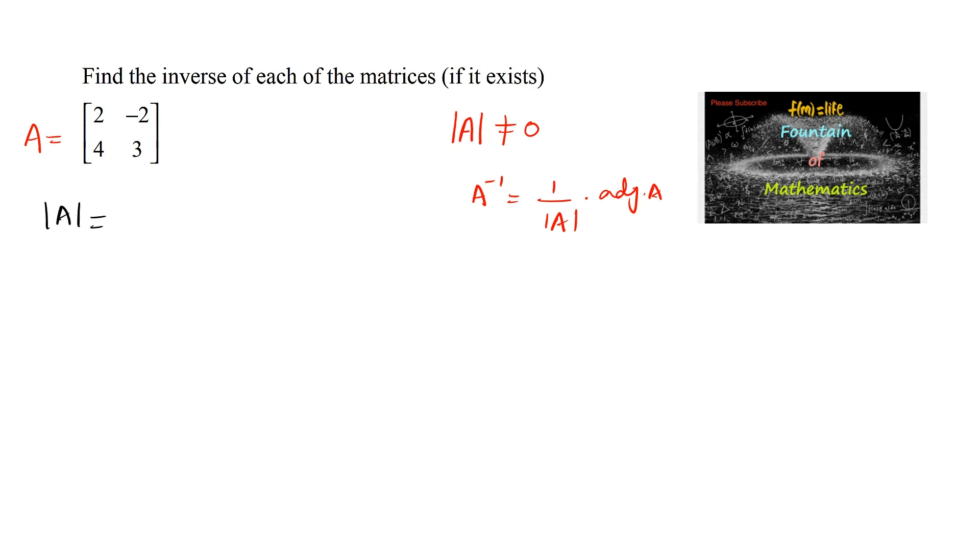Det(A) equals, for a 2 by 2 matrix, 2 times 3 minus (-2) times 4, which is 6 plus 8, which equals 14. We can say this is not equal to 0.